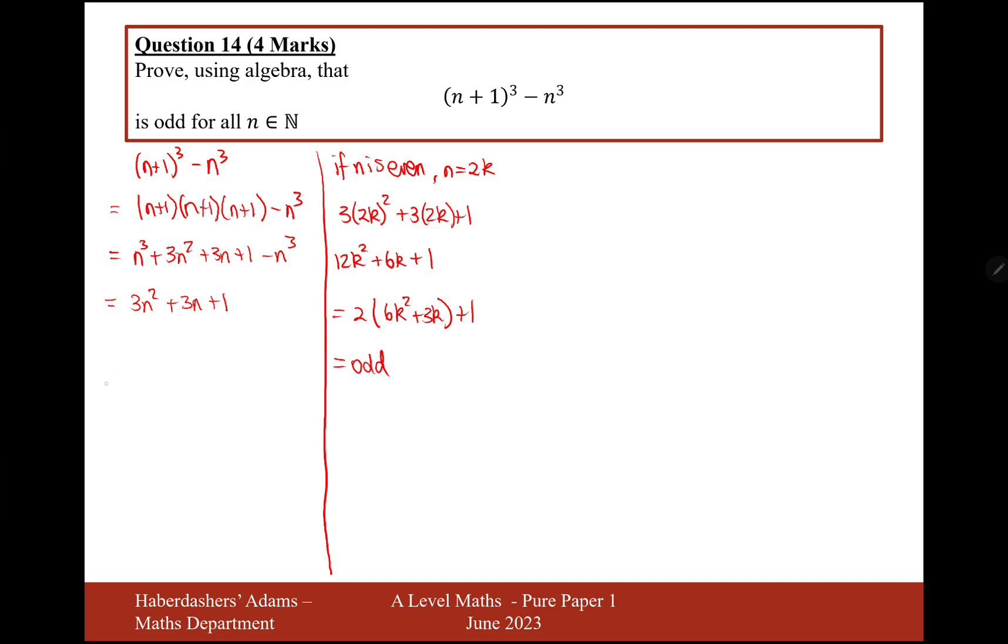In the previous question, this is not allowed. 3 times something plus 1. That doesn't prove anything. It doesn't prove it's odd. It doesn't prove it's even. But when it's 2 times something, 2 times something is always even. And then add 1 and you get an odd number. So that's why you couldn't do it for the previous, but you can do it for this.